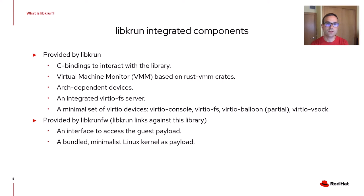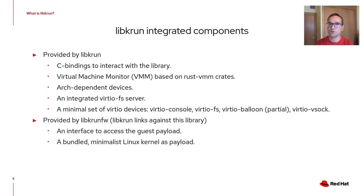LibKRUN integrates a number of components distributed among two libraries. The main one includes C bindings to interact with the library itself, a simple virtual machine monitor based on Firecracker and rust-vmm crates, some architecture-dependent devices, an integrated VirtioFS server, and a minimal set of Virtio devices: Virtio Console, VirtioFS, and Virtio Balloon with just the free page reporting feature. Provided by LibKRUN firmware, we also have a minimal interface to access the guest payload and a bundled minimalist Linux kernel as the default payload.